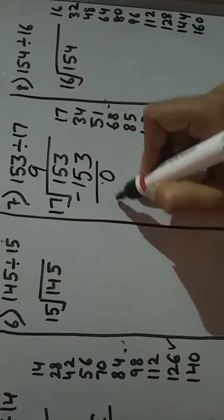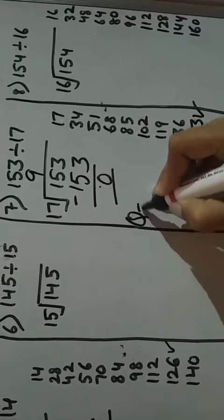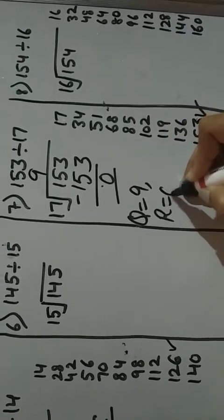153 minus 153 is 0. So your quotient is here 9 and remainder is 0.